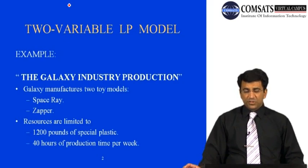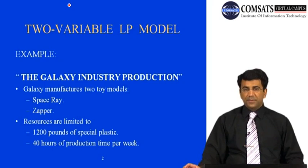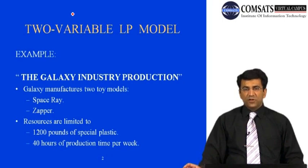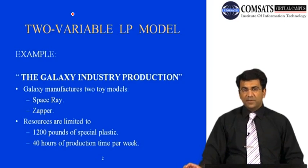Let's start with an example: the Galaxy Industry Production, which manufactures two toy models — Space Ray and Zapper. The resources are limited: 1200 pounds of special plastic is available for manufacturing these two products, and there are 40 hours of production time per week available for Galaxy Industry to produce both Space Ray and Zapper.